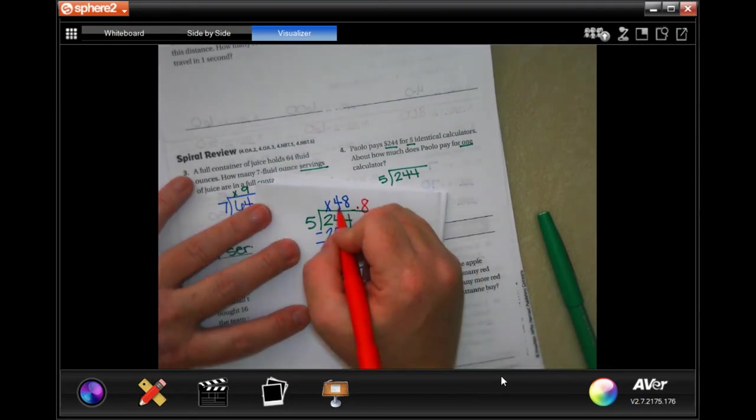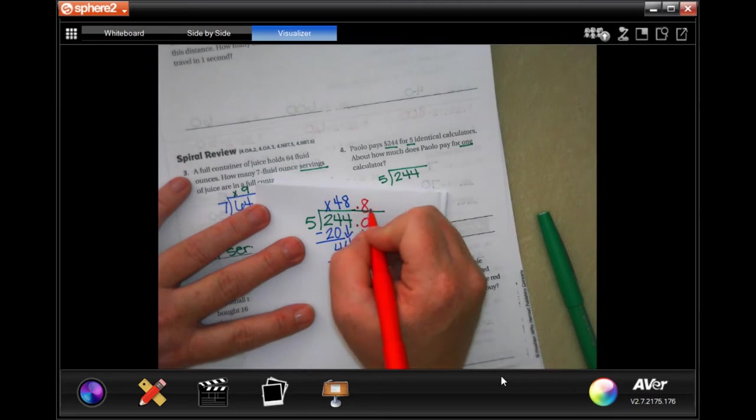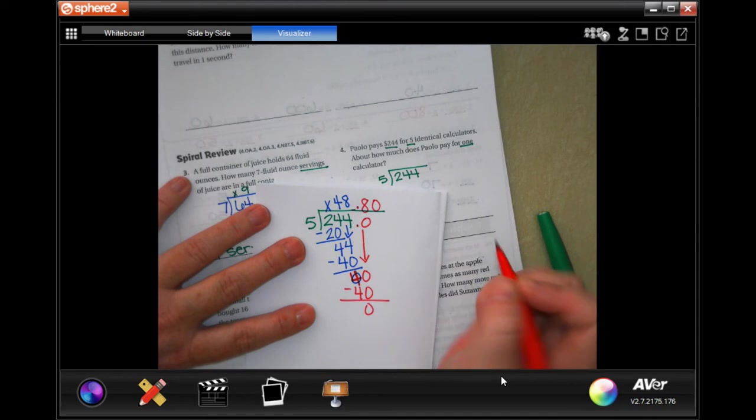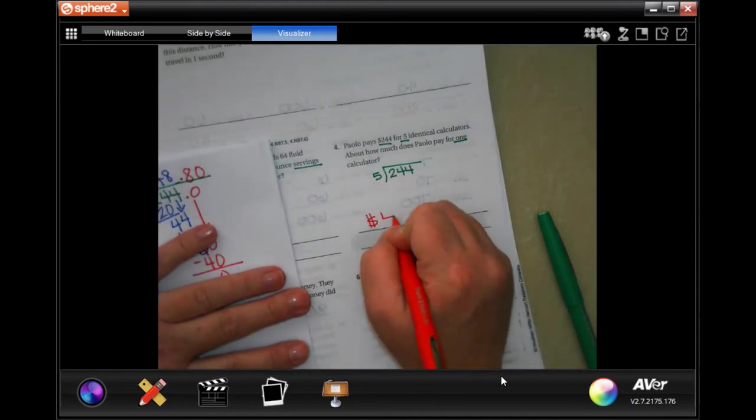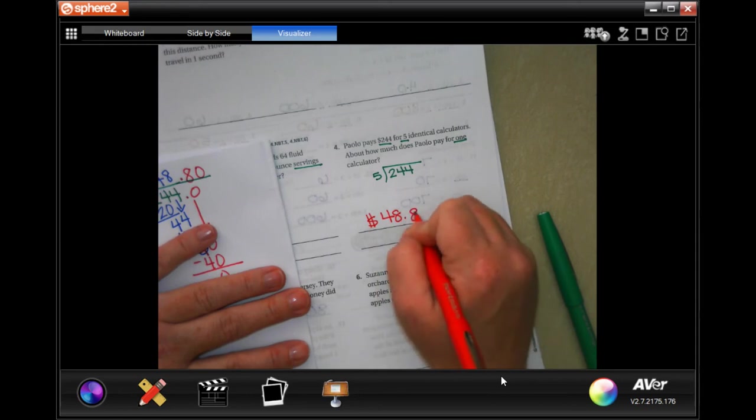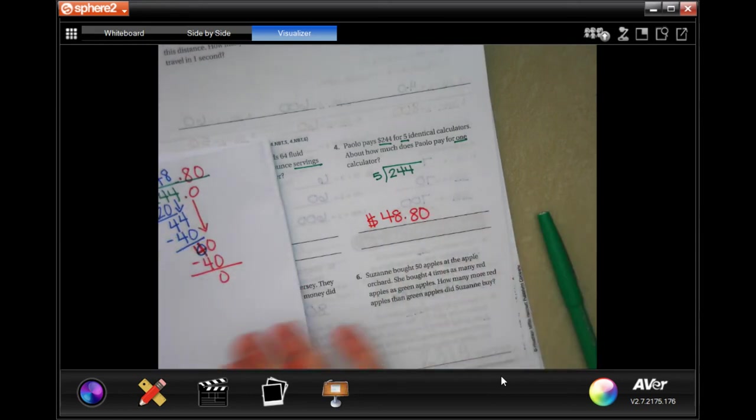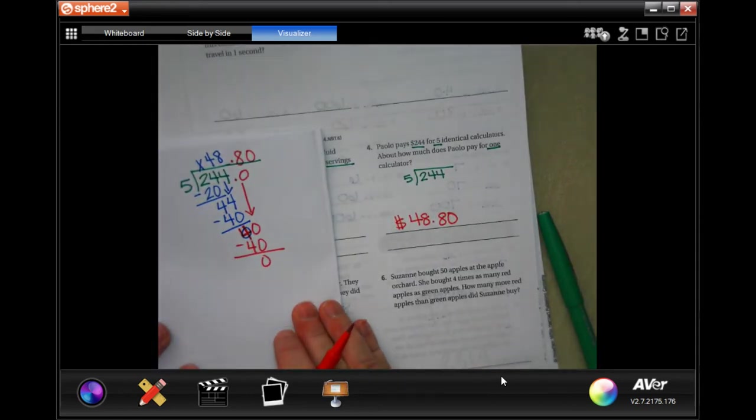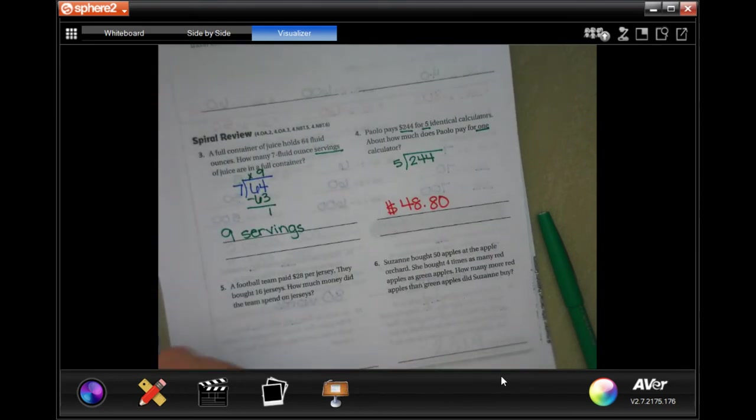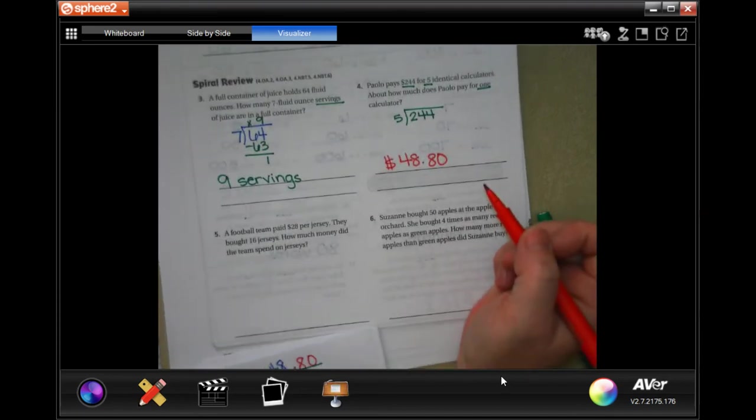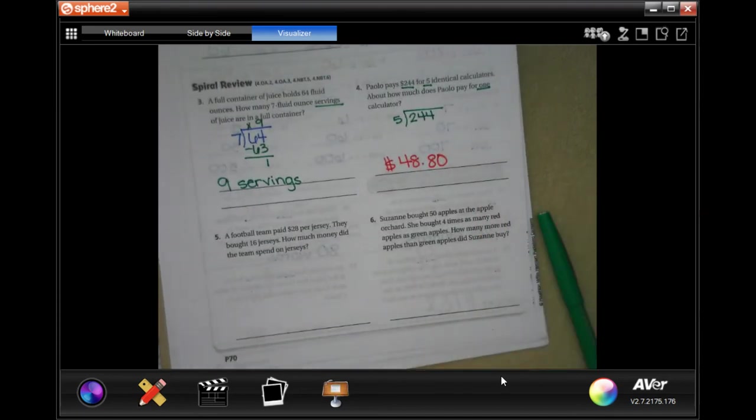But we don't say forty eight dollars and point eight cents, forty eight dollars and eighty cents. Write your work down though, so they can see how you got it. Make sure you put the dollar sign because that's your word label. Word problem, word answer.